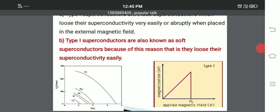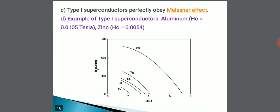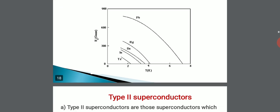Type 1 superconductors perfectly obey the Meissner effect. Examples of type 1 superconductors are aluminum and zinc. Their critical magnetic fields are 0.0105 tesla and 0.0054 tesla respectively, which are very small. A graph also shows several materials with their critical temperatures and how the critical temperature varies.